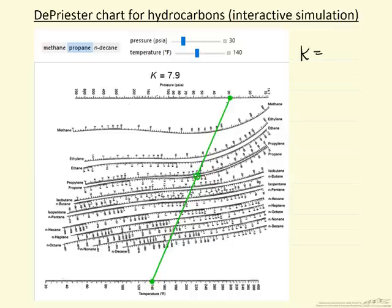The K value for a given component is the mole fraction of that component in the vapor phase divided by the mole fraction of that component in the liquid phase. So we're looking at mixtures.